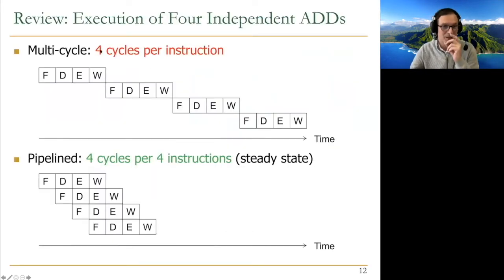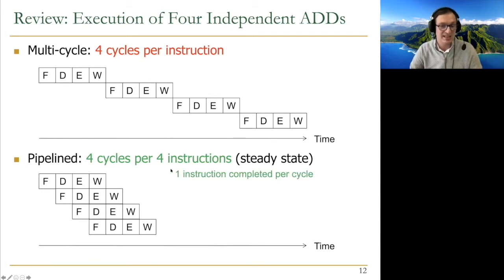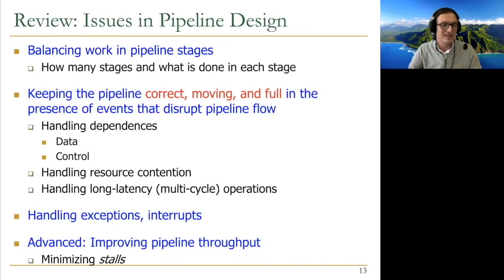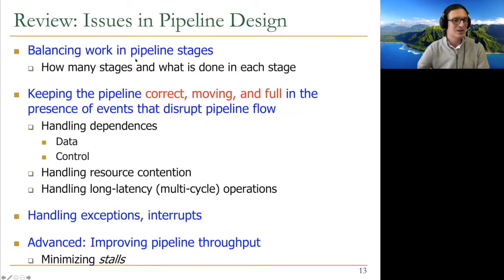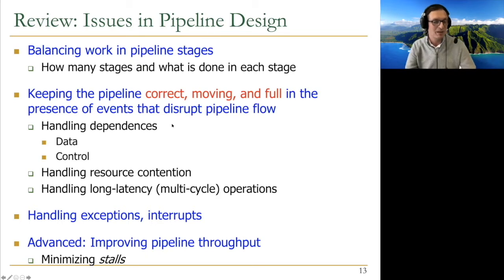The basic idea of pipelining is that instead of having four cycles per instruction in four independent add operations, we have four cycles per four instructions — meaning you finish one instruction per cycle in the steady state. Of course, life is not always this beautiful. Instructions are not always independent, and there are other issues in pipeline design. We need to talk about keeping the pipeline correct, moving, and full in the presence of events that disrupt pipeline flow, like data dependencies and control dependencies.